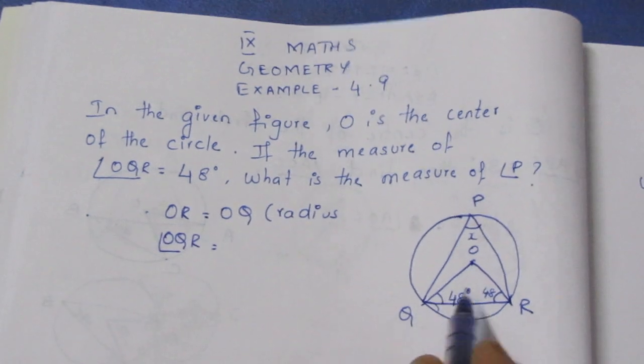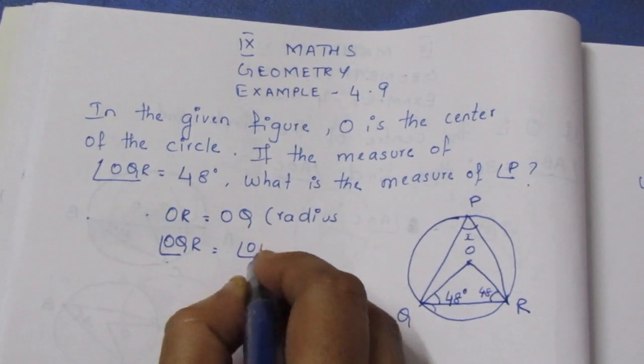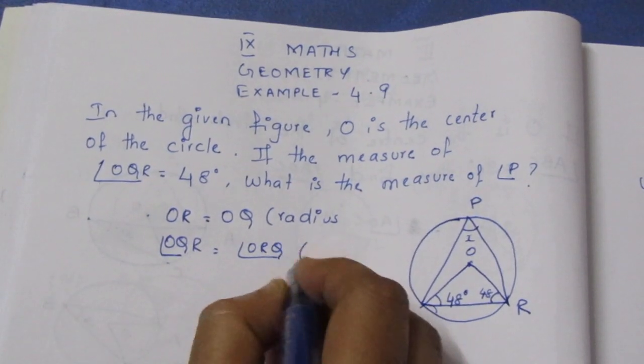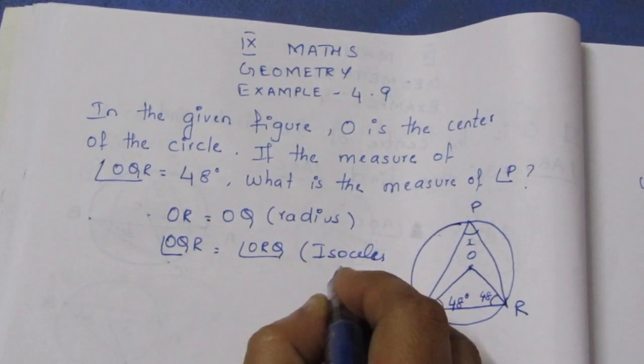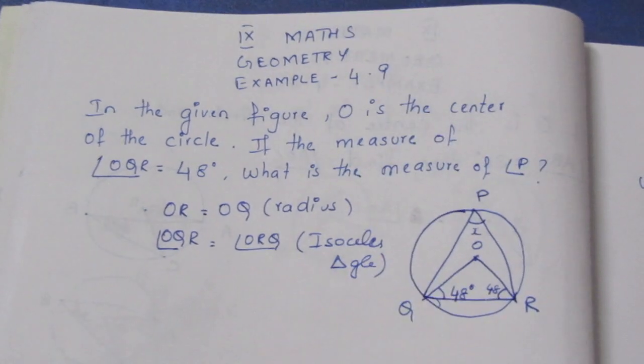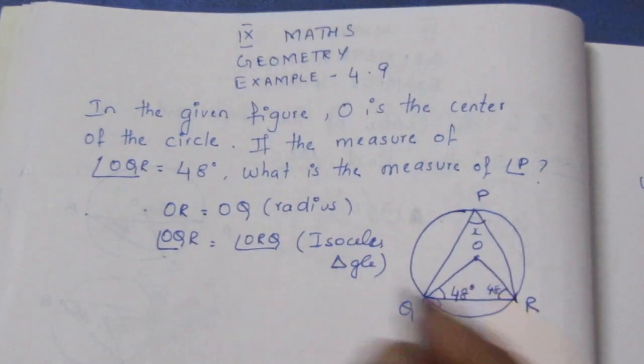And basically, angle OQR is equal to angle ORQ. Reason is isosceles triangle. These two are equal by angle sum property.